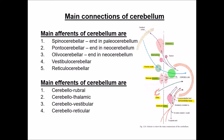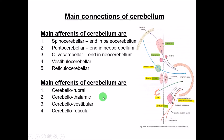The main connections of the cerebellum include afferent fibers: spinocerebellar from the spinal cord, pontocerebellar from the pons, olivocerebellar from the olive, vestibulocerebellar from the vestibular nucleus, and reticulocerebellar from the reticular formation. Efferent fibers include the cerebellorubal going to the red nucleus, cerebellothalamic going to the thalamus and then the cerebral cortex, cerebellorvestibular going to the vestibular nucleus, and cerebelloreticular going to the reticular formation.